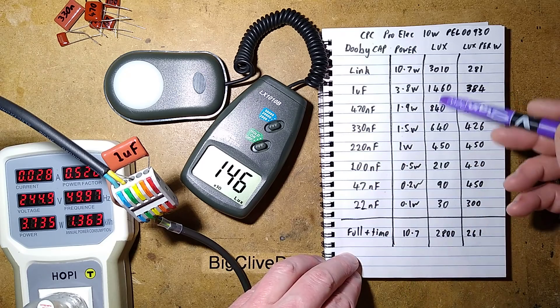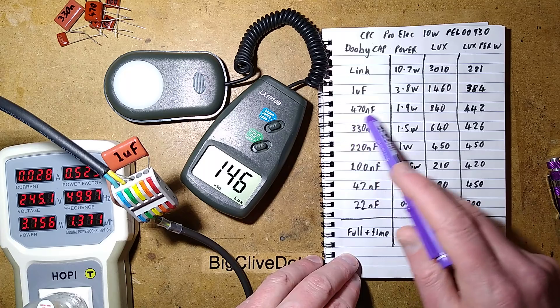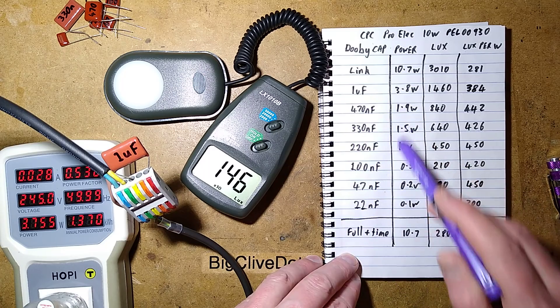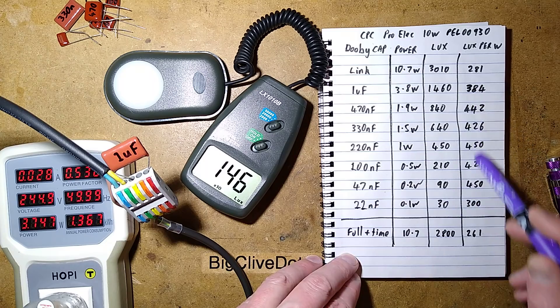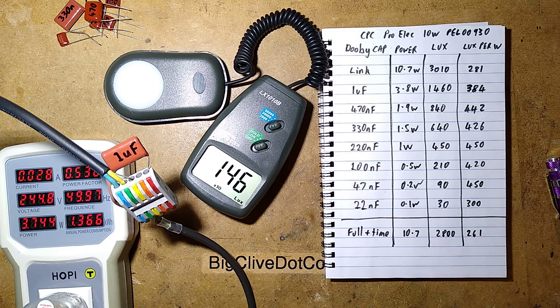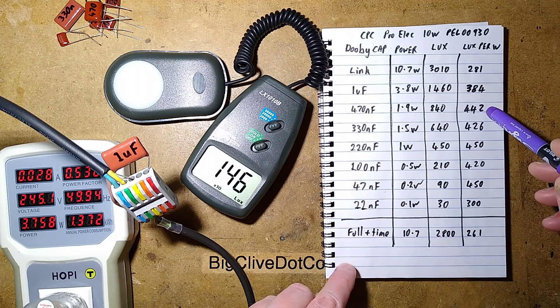I'll let you basically read down the results yourself, basically the capacitor values here, the equivalent wattage that it appeared to be, the lux level and the effect of the lux per watt. But, the takeaway from this is that by the time you get to, say, 470 farads at 2 watts, that's about the peak of efficiency you're going to get.